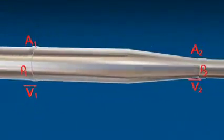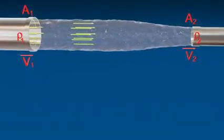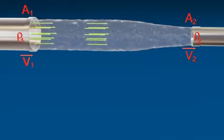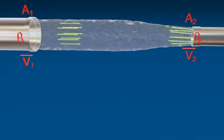Consider a fluid moves through a tube of area of cross-section A1 and A2 respectively, the volume of water entering A1 per second and the volume of water leaving A2 per second.